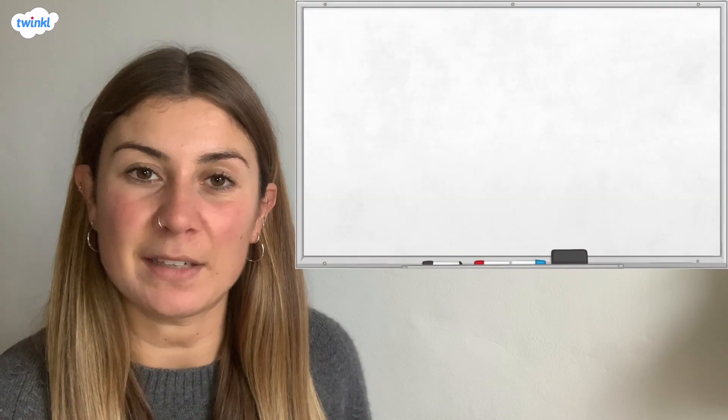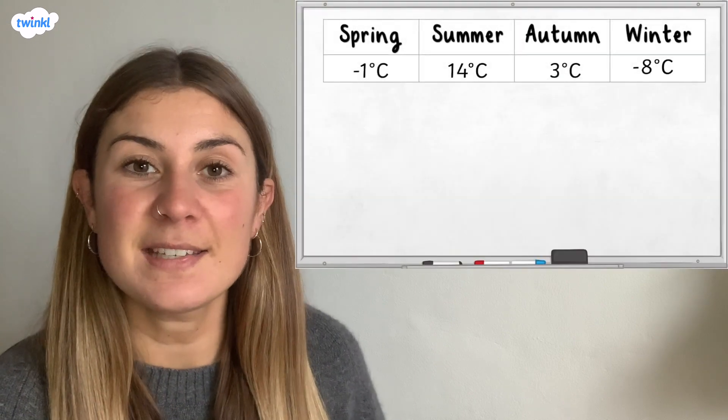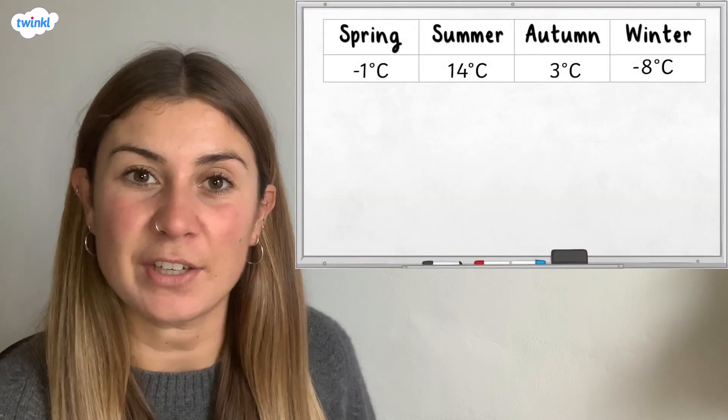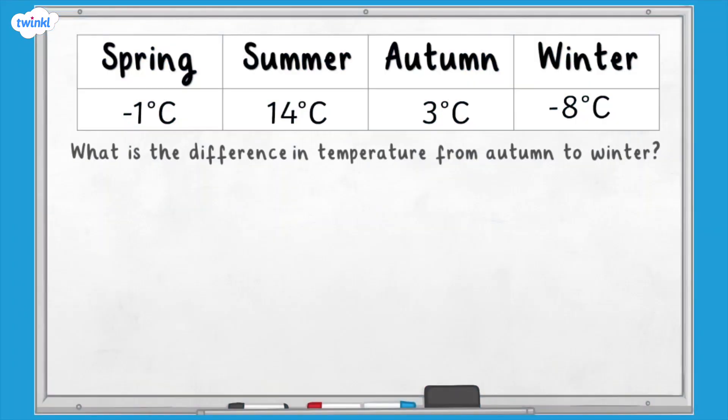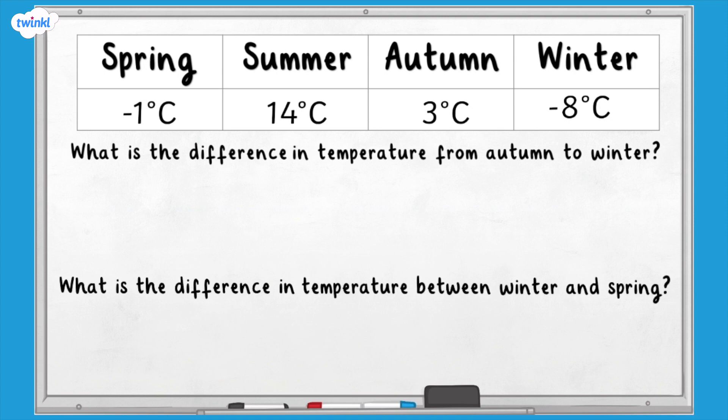Temperatures are recorded in Lapland throughout a year. This table shows temperatures that are taken each season. What is the difference in temperature from autumn to winter? Use the number line to help you. And what is the difference in temperature between winter and spring? Pause here to answer the questions.